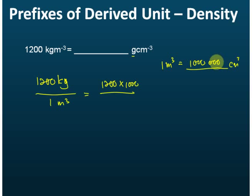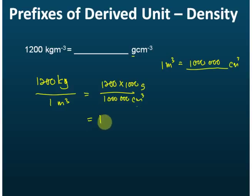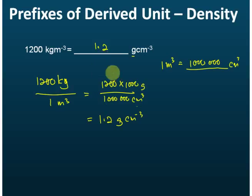So this gives us one million cm cubed in the denominator, and the mass is now in grams. Using your calculator to do the calculations, you should find that the answer is 1.2 grams per cm cubed. So 1200 kg per meter cubed is equal to 1.2 grams per cm cubed. This is how we do the conversion of density units — first write it in fraction form, then do the conversions, and use the calculator to get the final answer.